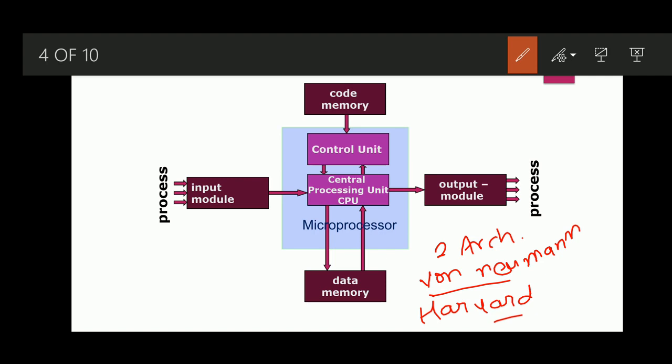Now, how does the microprocessor work? How do the code instructions work for the microprocessor? The microprocessor consists of two parts: the control unit and the central processing unit. It operates on input data and input signals. It will read the data from the code memory and read operands from the data memory, write results back to the data memory, and process all operations in the control unit and central processing unit. It updates the output module when processing is complete. All computing is based on machine code instructions stored sequentially in the code memory, and the microprocessor reads these instructions one after another in the control logic.